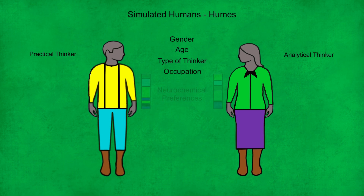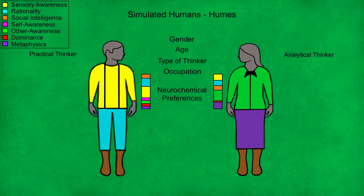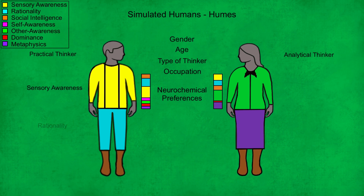The next characteristic that all Humes have is their neurochemical preferences. These are simply brain processes that each Hume enjoys stimulating on a regular basis, and they form what can be thought of as the disposition of each Hume. For one particular Hume, his first preference is sensory awareness, represented by yellow, and his second preference is rationality, represented by blue. For another Hume, her first preference is other awareness in green, and her second preference is metaphysics in purple. Together, the first and second preference constitute the disposition of a Hume, and as with real humans, their disposition is the way in which they contribute to their culture.